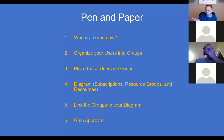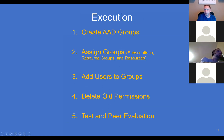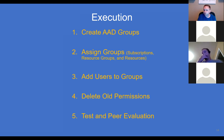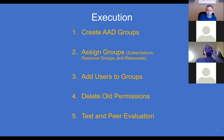Use groups. When auditors come in, you can just print out a list of all your groups and what they have access to — simple, easy, and done. Create those AAD groups, log into AAD and name them appropriately. Assign the groups to your different resources, subscriptions, and resources, then add the users. Make sure everybody has access before you go and delete permissions. Then test and have a peer evaluate what you put in place — maybe you gave somebody too many permissions. It's better to find it now than when you walk into an audit.